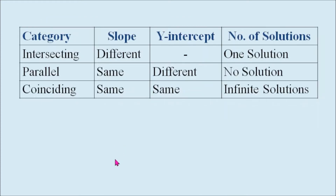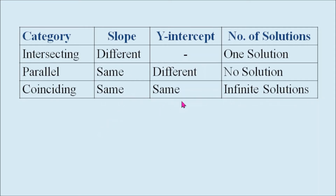This table summarizes when to tell that the pairs of lines are intersecting, parallel, or coinciding. For intersecting, the slopes are different. For parallel, the slopes are the same and their y-intercepts are different. For coinciding, their slopes are the same and their y-intercepts are also the same. That means we can already tell whether the two lines are intersecting, parallel, or coinciding without even graphing them — that is, by just comparing their slopes and y-intercepts.